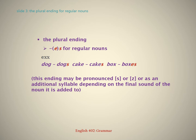The plural ending: S or ES for regular nouns. Examples: dog, dogs; cake, cakes; box, boxes. This ending may be pronounced /s/, /z/, or as an additional syllable depending on the final sound of the noun it is added to.